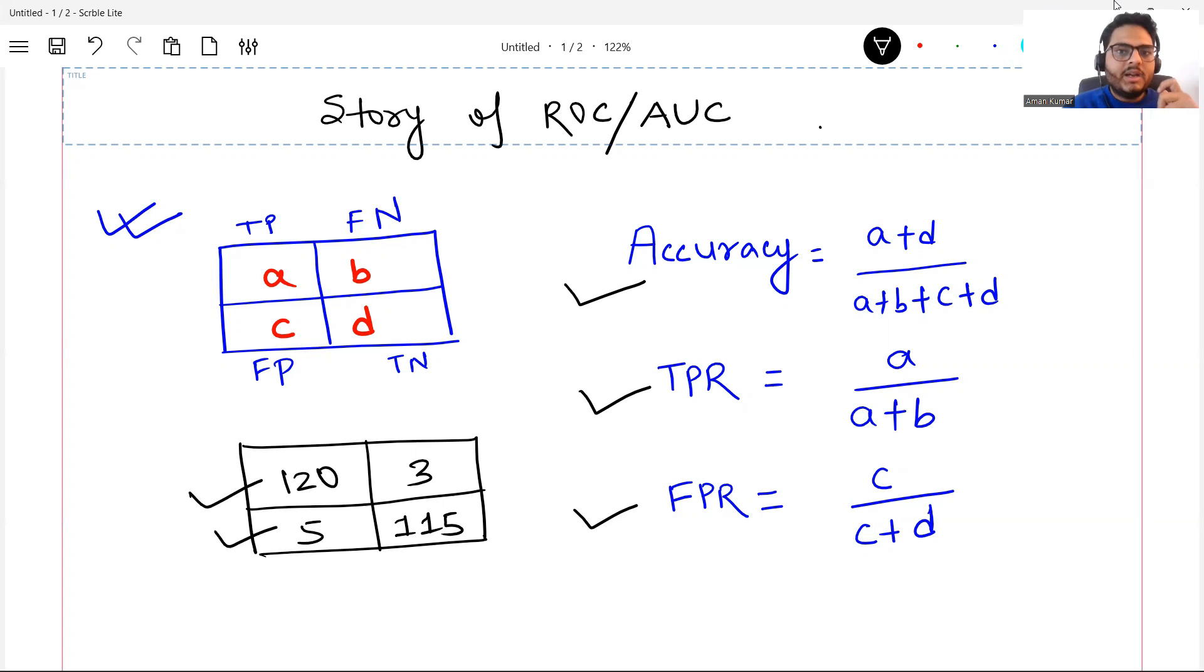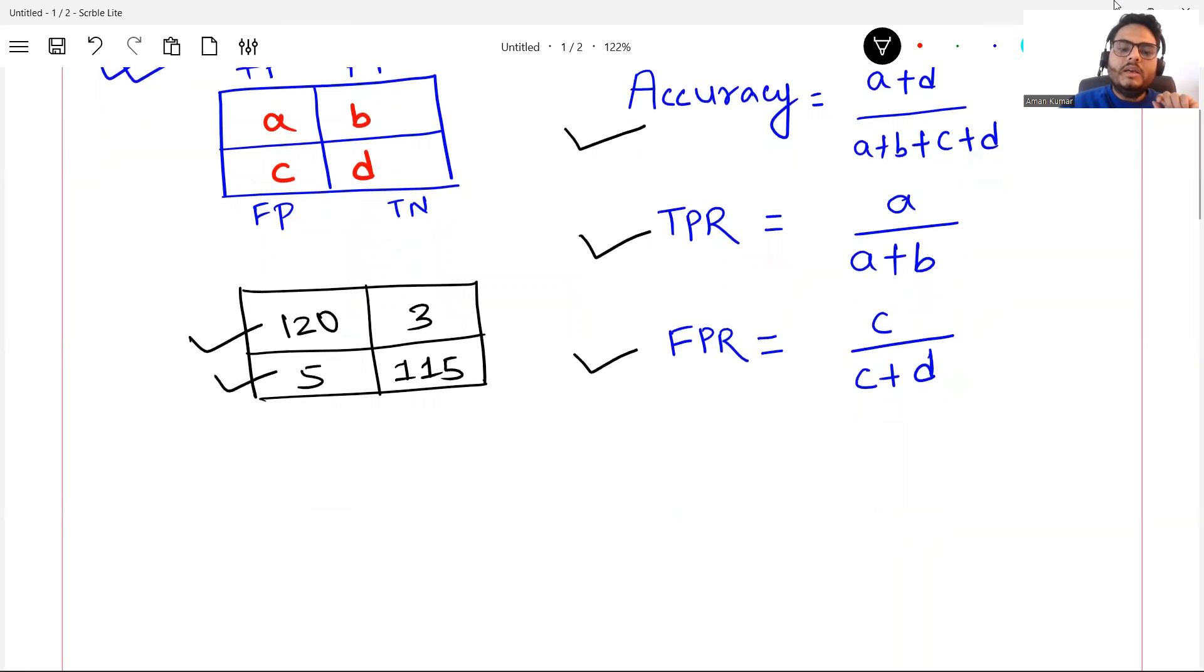You might be understanding from the hint I'm giving you that based on some probability threshold, these numbers are fixed. How do you know which is true positive, which is false positive? By setting up a threshold. The threshold by default is 0.5. This is a very simple concept to understand.